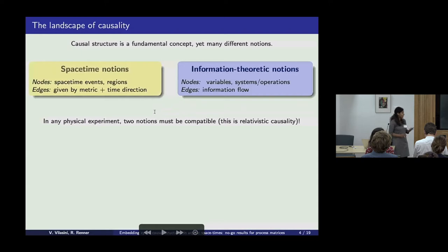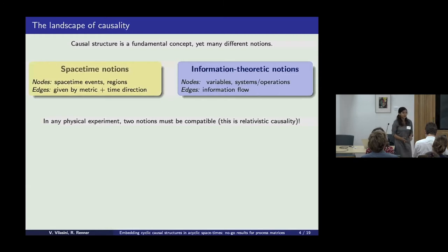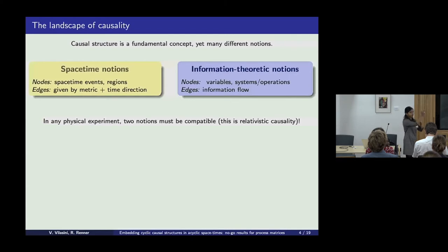However, in any physical experiment, even though these two different notions are at play, they have to come together in some compatible manner. And in fact, this is precisely what we mean by relativistic causality — it's constraining the flow of information to go from past to future in the spacetime.